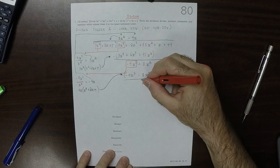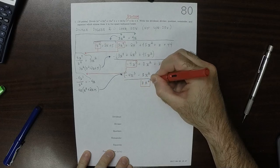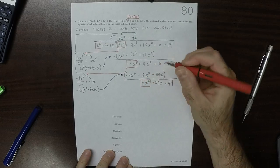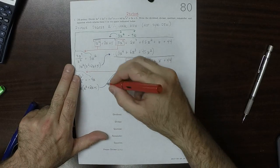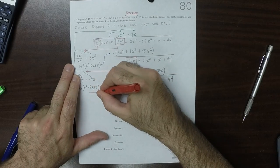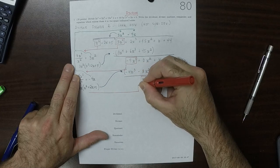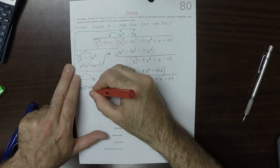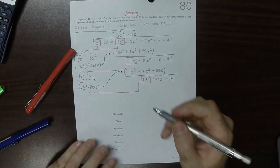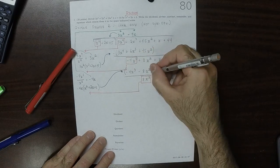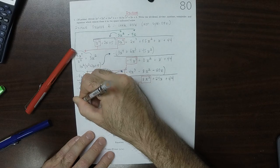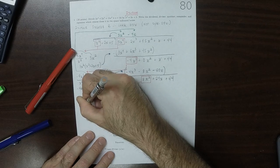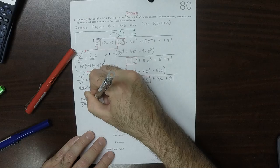Now the leading term inside is 8x squared, which is still less than or equal to the degree of the divisor. 8x squared divided by x squared is 8.